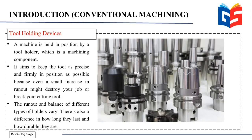Every machine tool uses a tool holding device for holding the cutting tool. The machine is held in position by a tool holder, and the aim is to keep the tool as precise and firmly in position as possible — even a small increase in runout might destroy your job. The tool holding device must hold the tool in a very precise, tight, and efficient manner. Even a small unintended movement can damage the workpiece or its overall finish. The runout and balance of different types of holders vary, and there are also differences in how long they last and how durable they are.